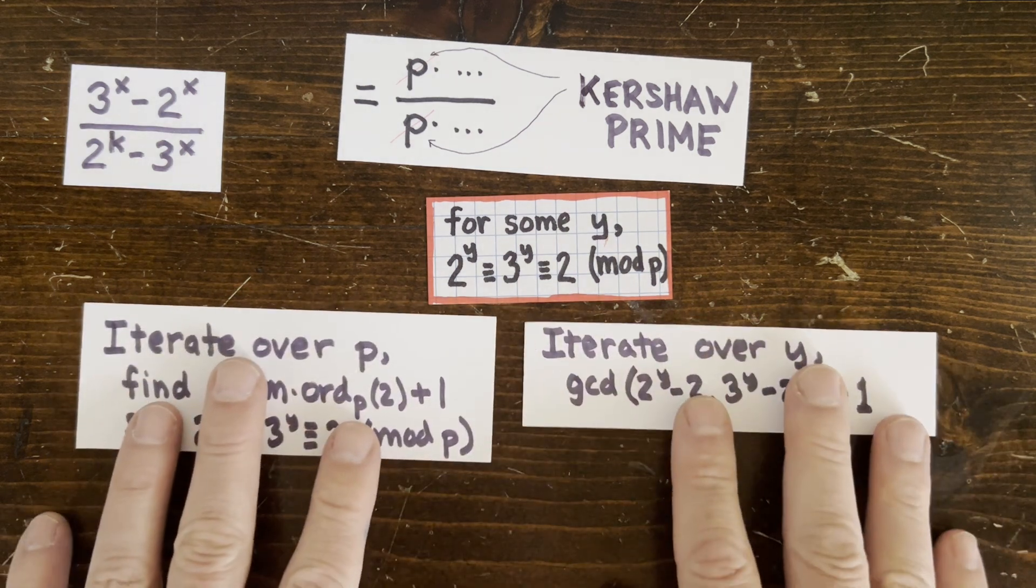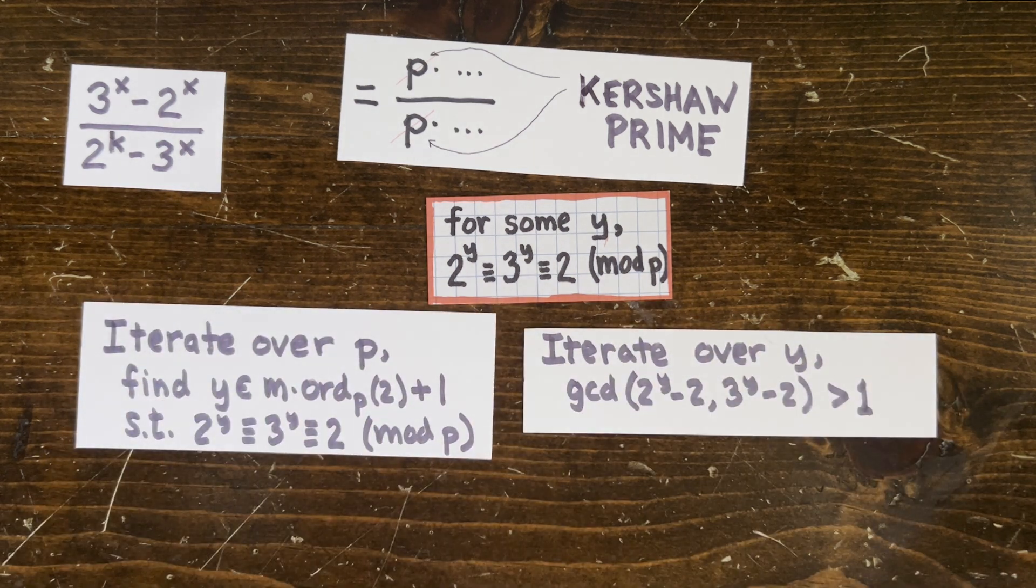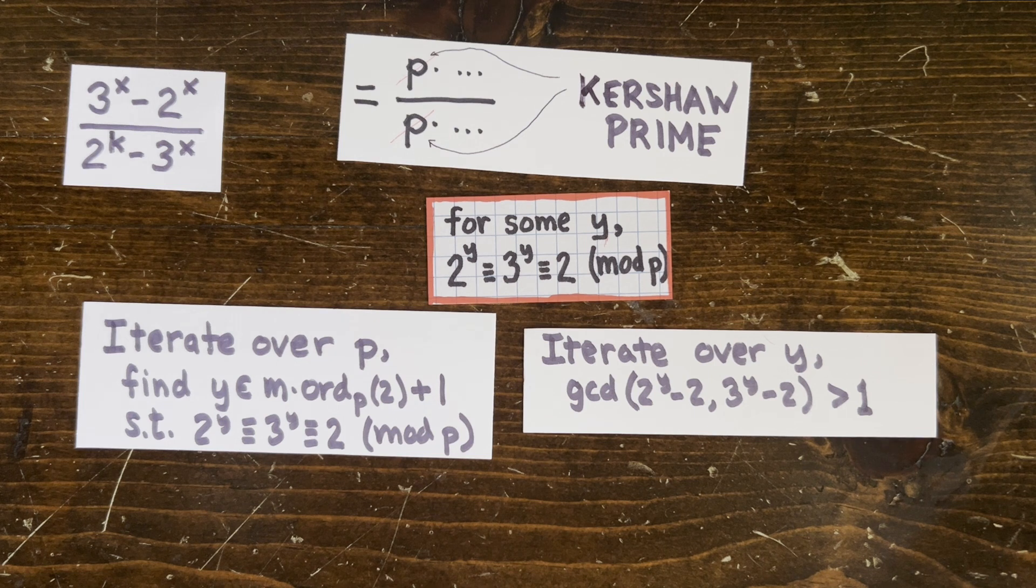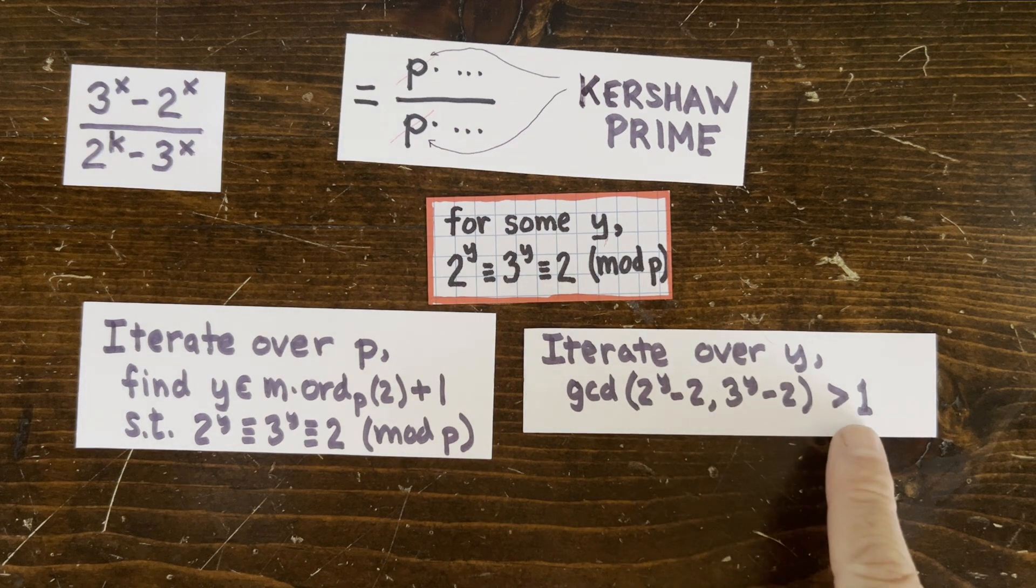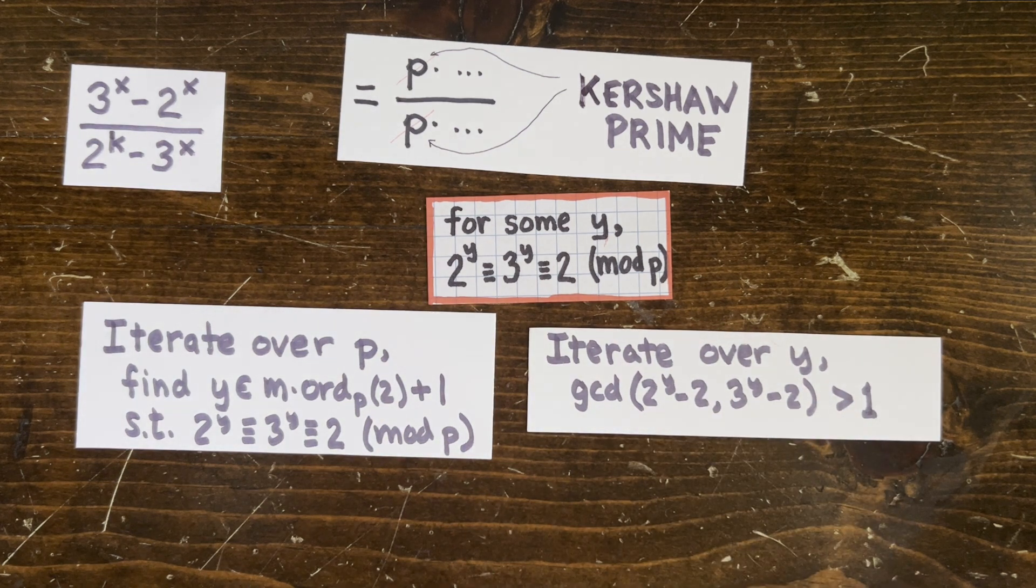Or we can iterate through all the y's and for each one see if the greatest common denominator of 2 to the y minus 2 and 3 to the y minus 2 is greater than 1. If it is then the GCD will give us some more Kershaw primes.